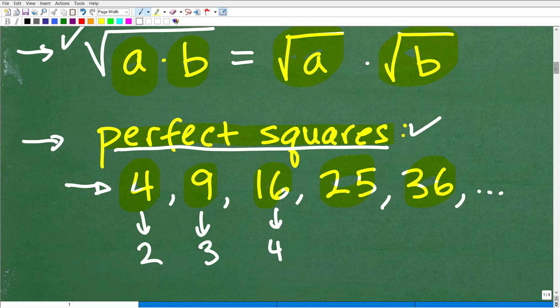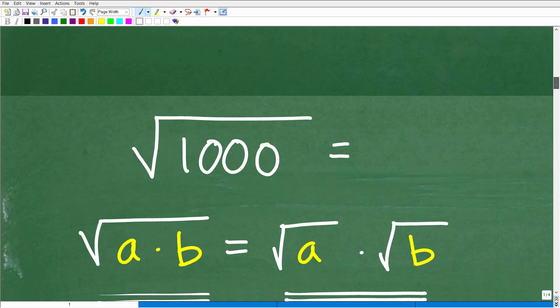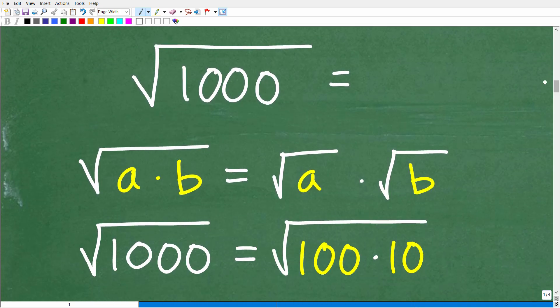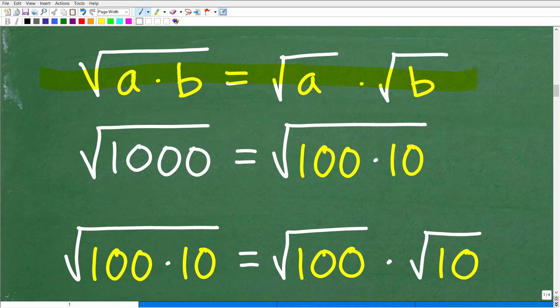Okay, so let's go ahead and put this all together. And so here we have the square root of 1,000. So again, we're going to be using this property here. We're going to want to factor this 1,000. And we're going to want to factor, there's a lot of different ways you can factor 1,000. But when we factor this, we want to be thinking about perfect squares. And you can see here, 1,000, when we factor it, we could factor it this way, 100 times 10.